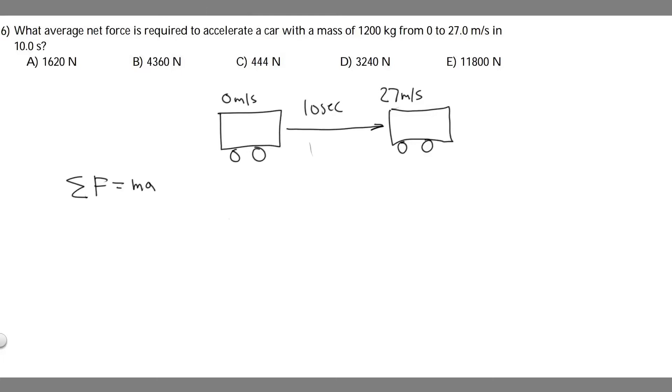In this problem, we're told what average net force is required to accelerate a car with a mass of 1,200 kilograms from 0 to 27 meters per second in 10 seconds. So let's just go ahead and draw what's going on here. We have this car, 0 meters per second, and we're going to be applying some force to it. And we're trying to do it in 10 seconds. We're trying to get it to 27 meters per second. We're trying to find the force to do that.